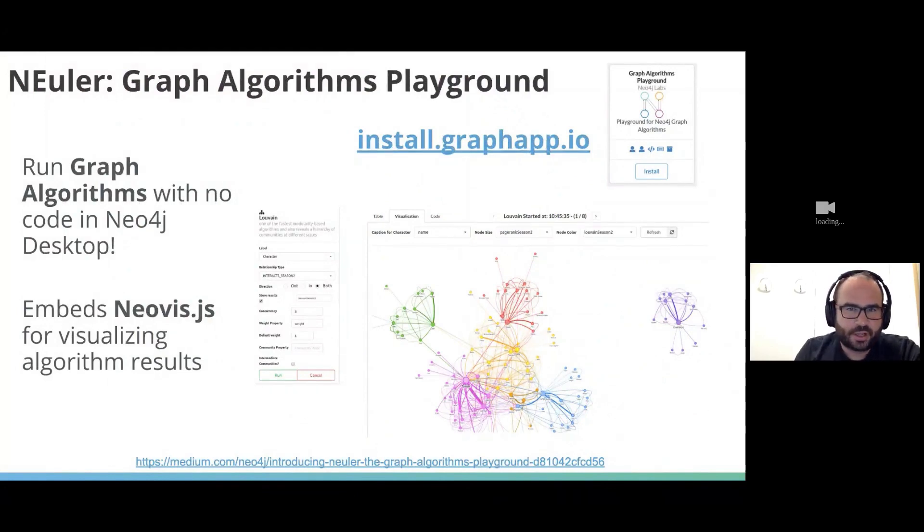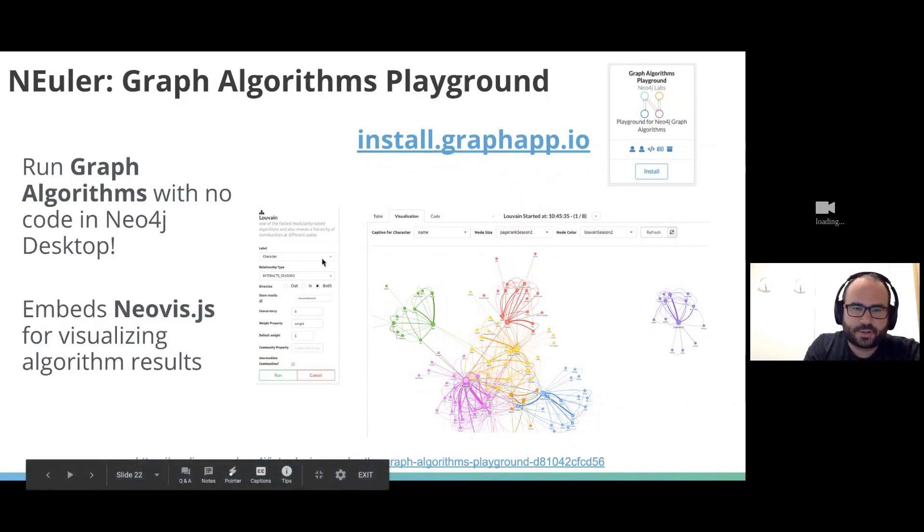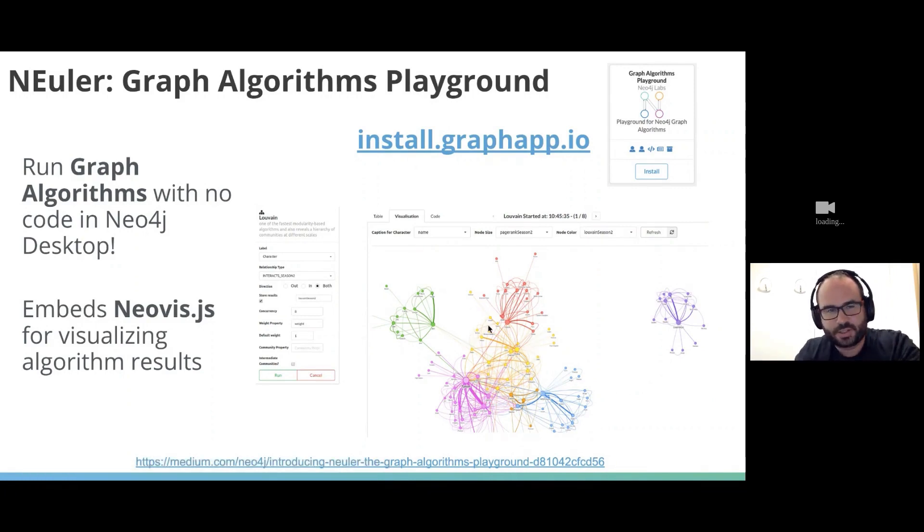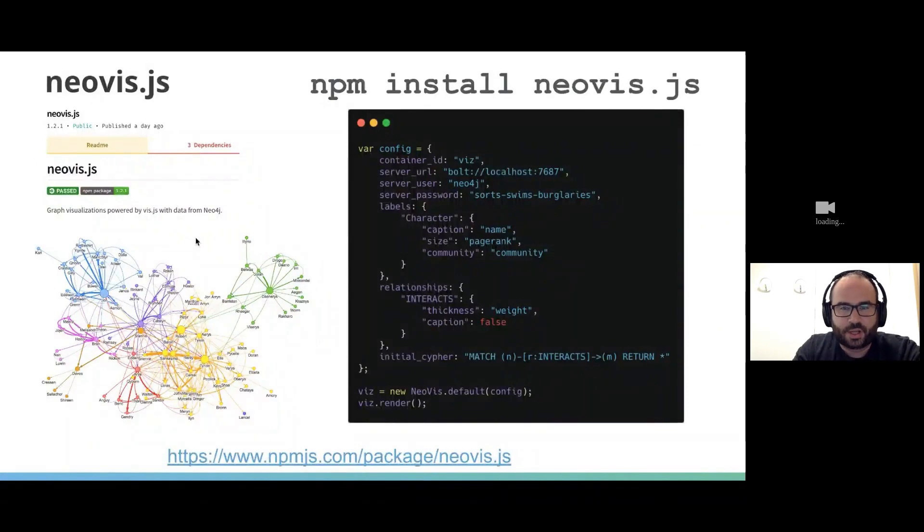So in this case we were writing Cypher to do our graph algorithms, but you don't actually need to write any Cypher to run graph algorithms. There's a graph app called Neuler or the graph algorithms playgrounds that you can install in Neo4j desktop. It has a nice sort of query builder UI for running algorithms and it embeds Neovis directly to visualize the results of these algorithms, which you can get at install.graphapp.io.